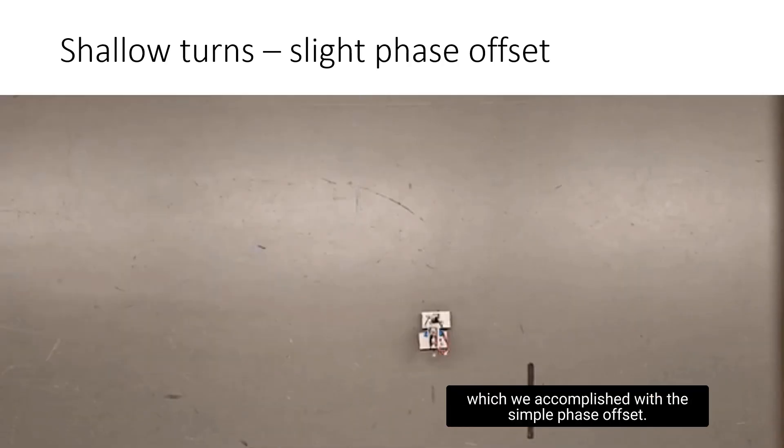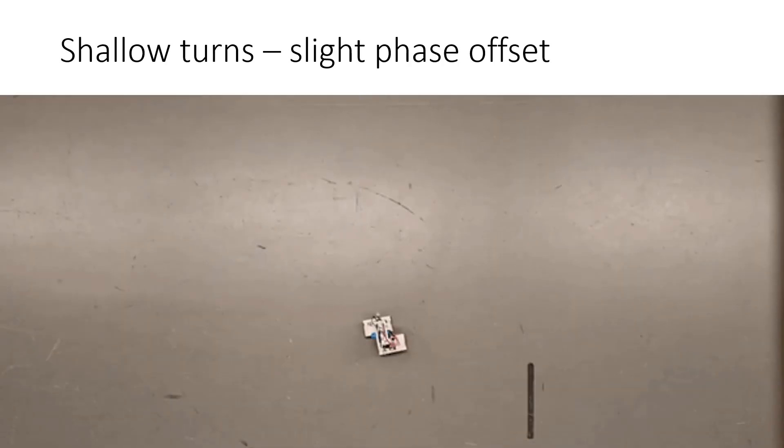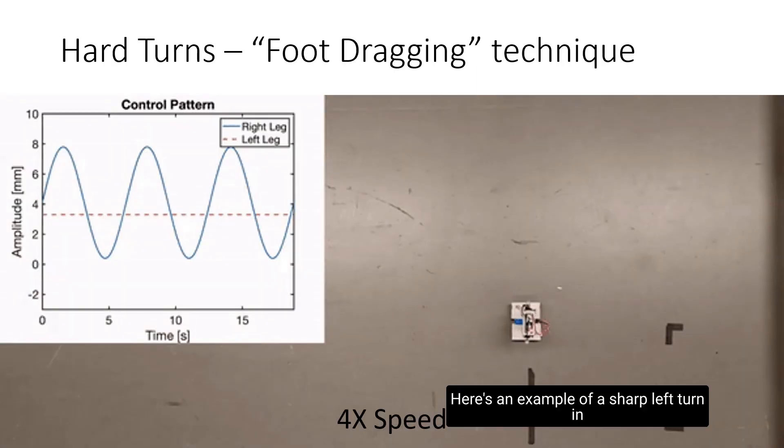Here is an example of a shallow left turn which we accomplished with a simple phase offset. Here is an example of a sharp left turn in which we turned one of the actuators off.